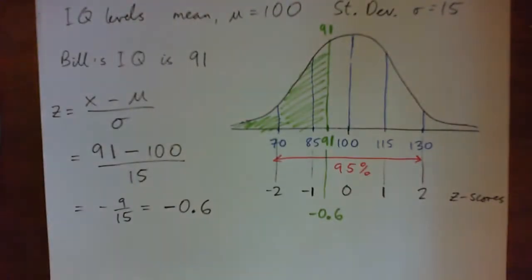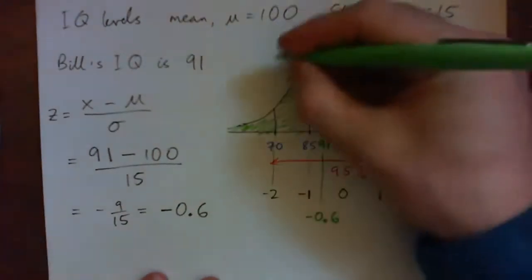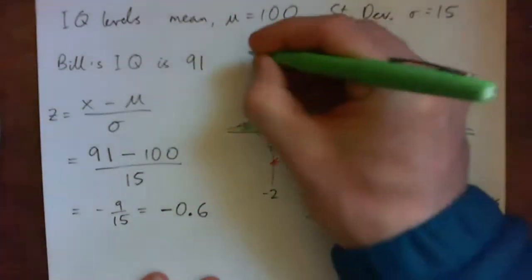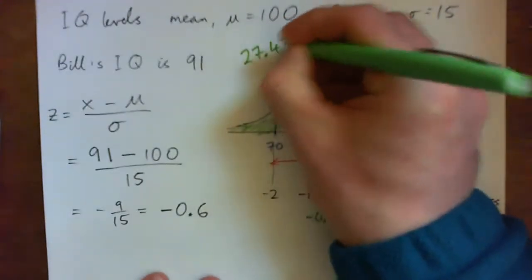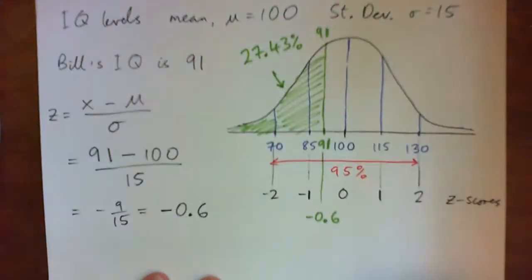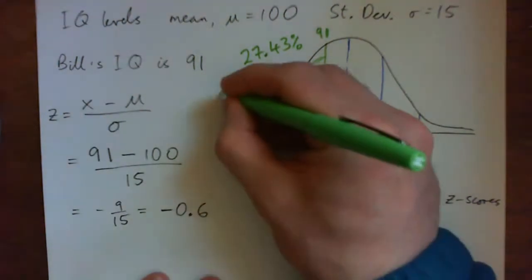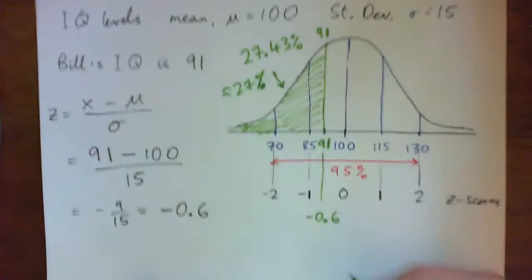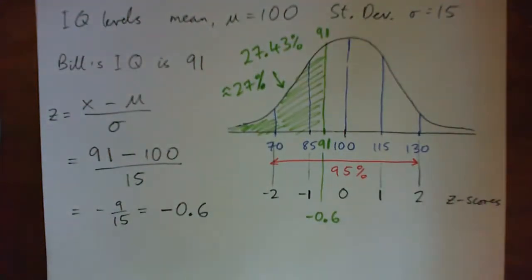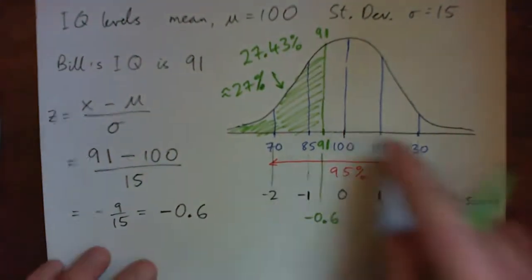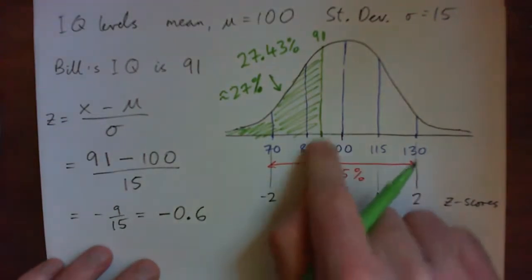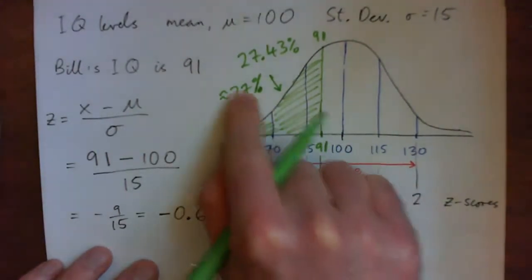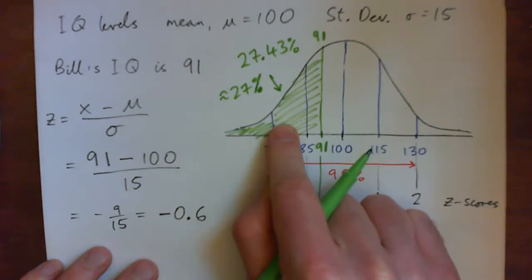So anyway, what that means is, going back to our paper, what that means is this area here is 27.43%, right? Or I'm just going to round that to 27%, okay? Just so we can actually speak because 27.43 is a mouthful. So his IQ score is above 27% of the population. Does that make sense?